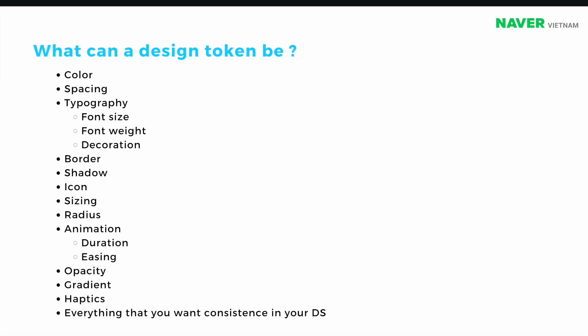So what should be a design token? It can be simple properties like color, spacing, and typography — or something more complex like animation duration, opacity, gradient, or even haptic feedback. Anything you want consistency in within your design system could be a design token.